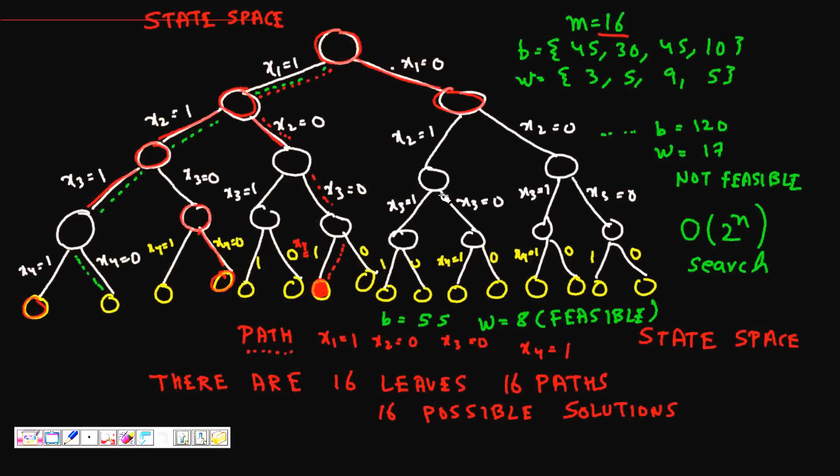This is all depicted by this state space. For this path, we have the green path where item one, two, and three are chosen. So benefit is 45 plus 30, that's 70, plus 45, it's 120. But the weight becomes 17 and your knapsack capacity is 16, so it's not a feasible solution. Feasible means your constraint should be satisfied.